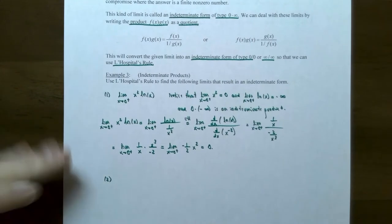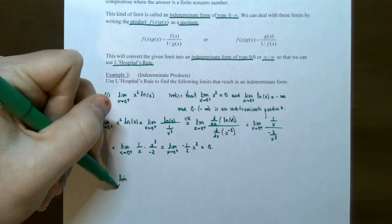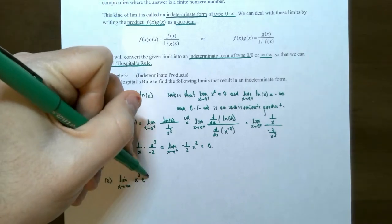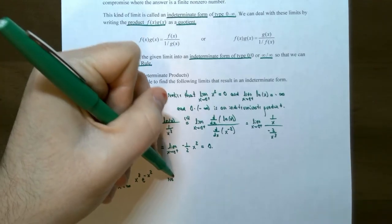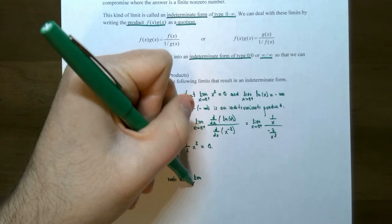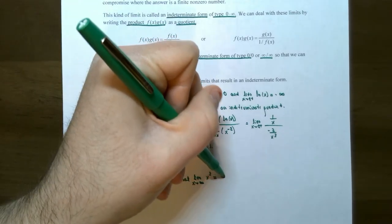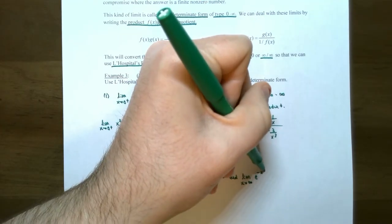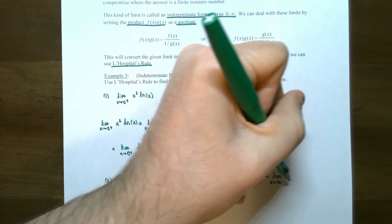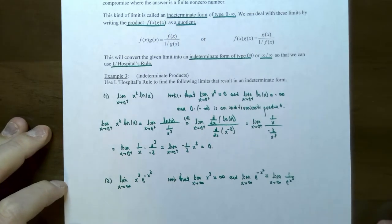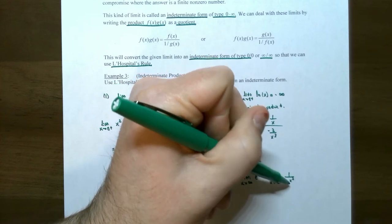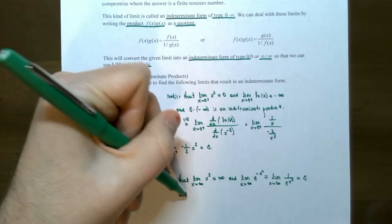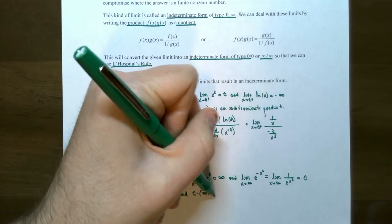Let's try problem number 2: the limit as x approaches positive infinity of x cubed times e to the negative x squared. The limit of x cubed as x approaches infinity is positive infinity. And e to the negative x squared is 1 divided by e to the x squared, so as x grows without bound, this limit is 0. So we have an indeterminate product: 0 times positive infinity.